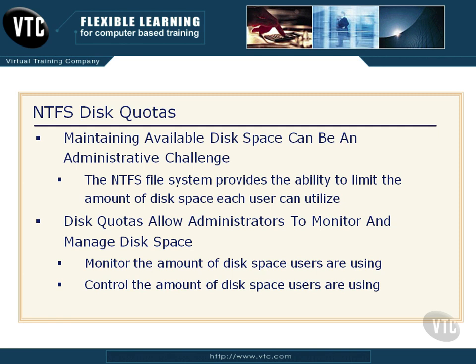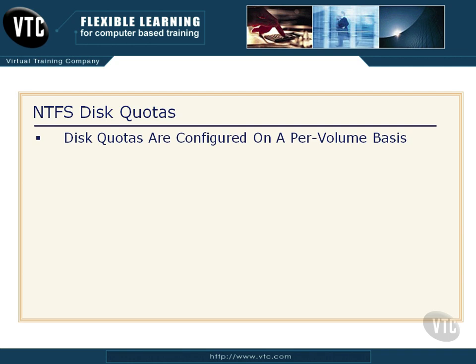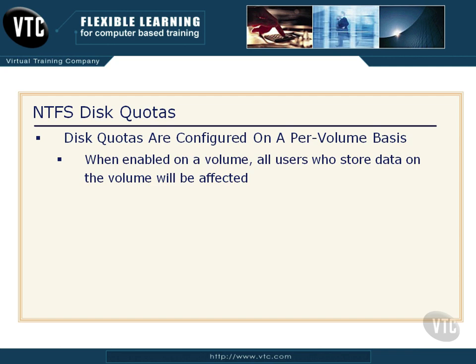We can control the amount of disk space they're using by simply allowing the system to prevent them from having any more space. So once they use the space up, they can't save anything else. My experience with that in the real world is this is an opportunity to meet that person's vice president of the department, saying increase this person's disk space — and it usually happened. Remember for the exam: disk quotas are configured on a per volume basis. You enable disk quotas on a per volume basis, and once you do that, all users who store data on that volume are going to be affected.